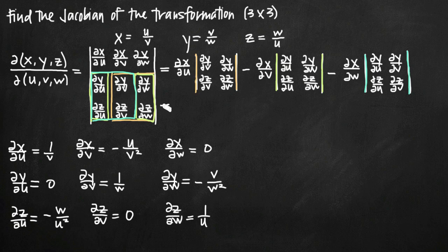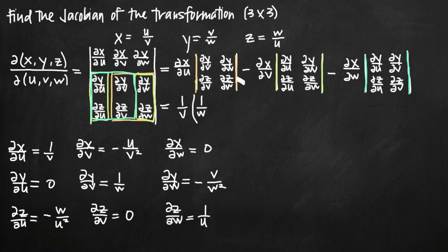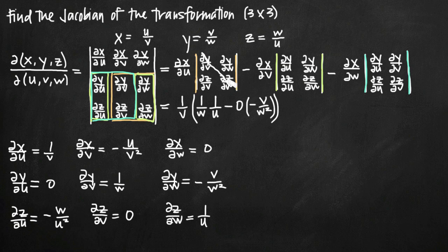Now we can plug in the partial derivatives. The partial derivative of x with respect to u is 1 over v, multiplied by the corresponding 2 by 2 matrix. To evaluate a 2 by 2 matrix, multiply the upper left by the lower right and subtract the product of the other two. So we take (1 over w) times (1 over u), then subtract (0) times (negative v over w squared). That's how you evaluate a 2 by 2 matrix.